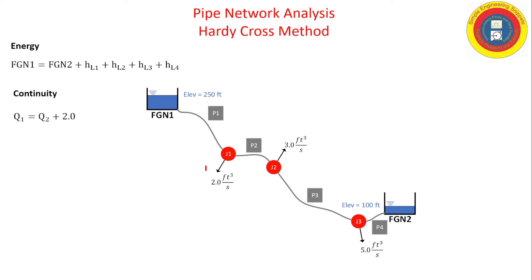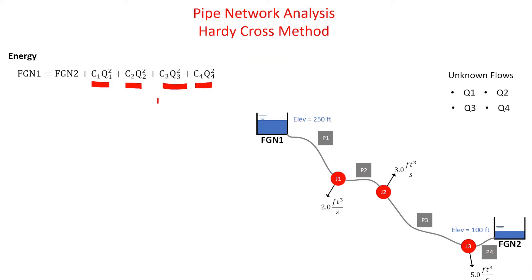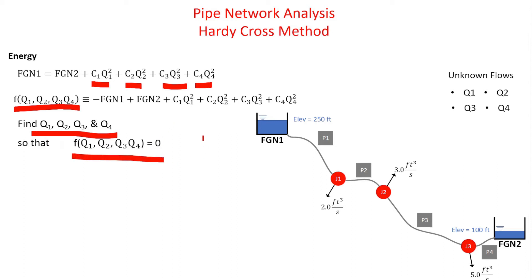Let's write the energy equation: fixed-grade node 1 equals fixed-grade node 2 plus all the head losses of the four pipes summed together. For continuity, we need three equations — the flow coming into junction 1 equals the flow leaving out pipe 2 and the demand, and similarly for junctions 2 and 3. We plug in the head loss expressions for each of the four pipes using loss coefficients C1, C2, C3, and C4. We define this as function F, set it equal to zero, and our goal is to find Q1, Q2, Q3, and Q4 such that this function equals zero.